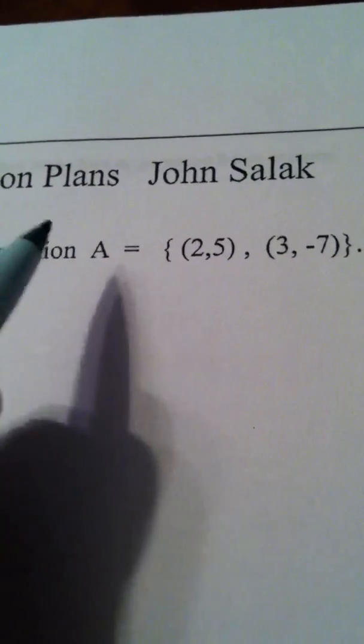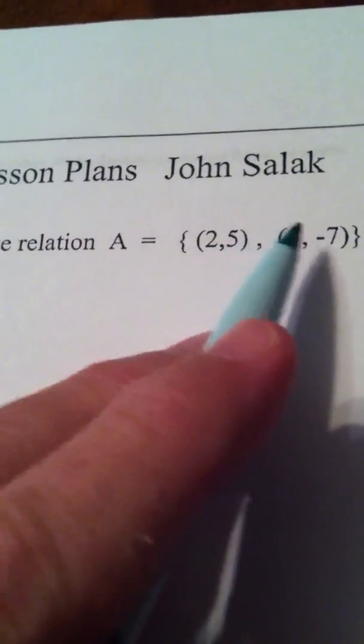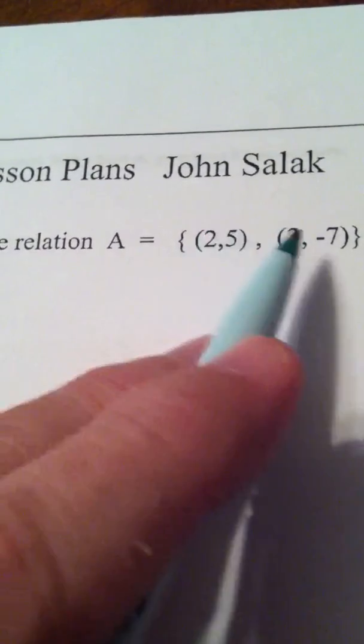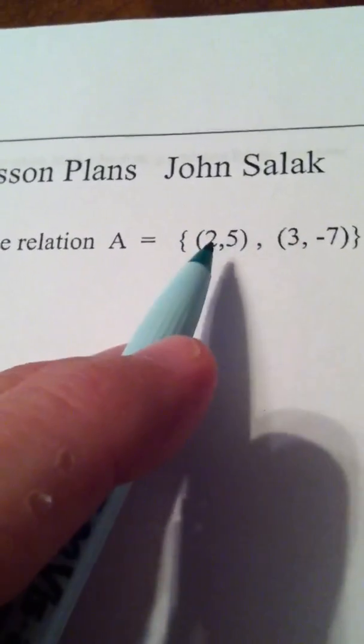Now first of all remember that a relation in math is a collection of ordered pairs. This relation happens to be finite because there are only two ordered pairs.